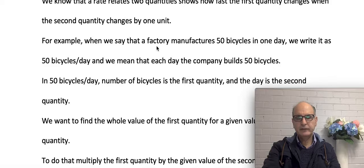And say if you got a factory which makes 50 bicycles in one day, we write it as 50 bicycles per day and what it means we have for each day this company builds 50 bikes.